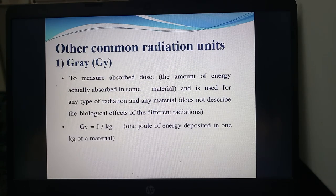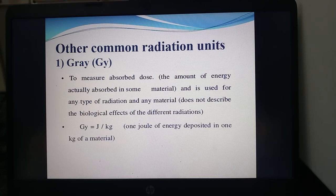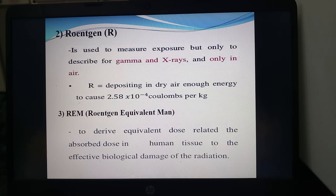The Gray measures the absorbed dose — the amount of energy actually absorbed in some material. It is used for any type of radiation and any material, and does not describe the biological effects. One Gray equals one joule of energy deposited in one kilogram of material. The Roentgen is used to measure exposure, but only for gamma or X-rays and only in air — depositing enough energy to cause 2.58 × 10⁻⁴ coulombs per kilogram of dry air.